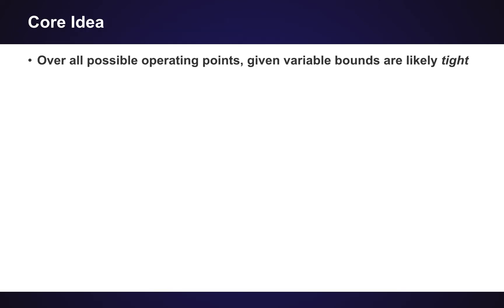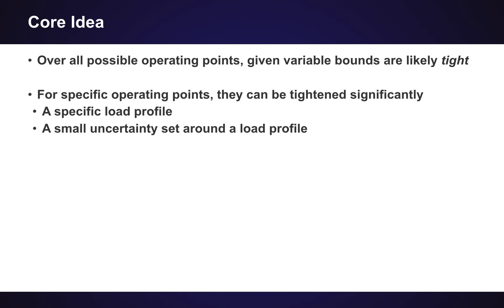The core idea of bound tightening is to figure out what are the smallest variable bounds you can use for these convex relaxations without removing any value in the original problem. For a specific operating point, these bounds might be very tight. If you know the load profile, you can probably reduce the operating bounds of your power flow problem by a lot. The values given in the dataset are for any possible load profile — they're the universal operating constraints of the power network, not for a specific point in time.